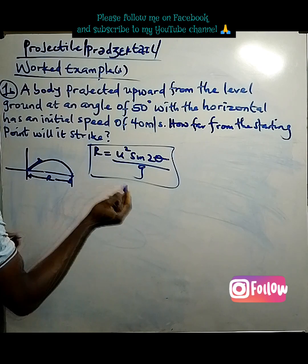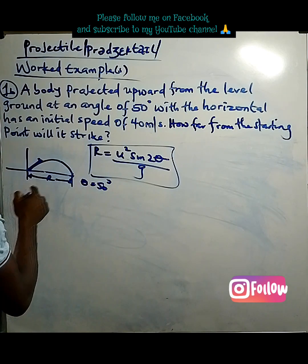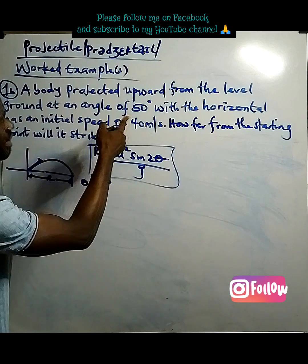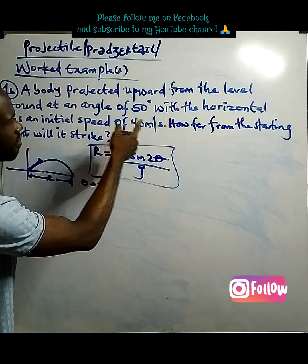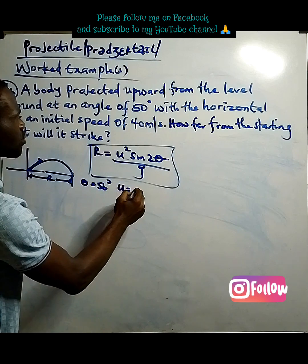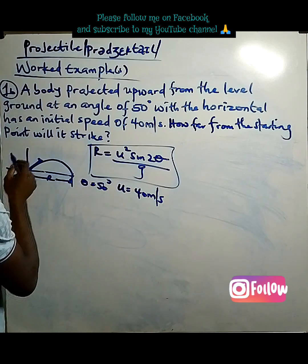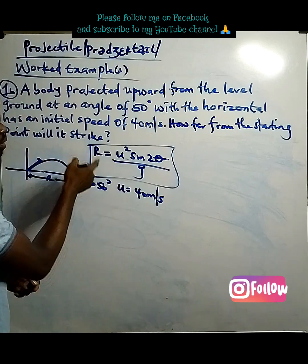So, quickly, we have the readings already. We have the things we need. Our angle is 50 degrees. The body was projected upward from the level ground at an angle of 50 degrees to the horizontal. That's our initial speed. Initial speed is the speed of projection, 40 meters per second. So, from the starting point it will strike, they want us to get the range.